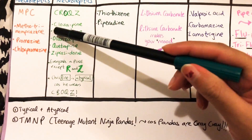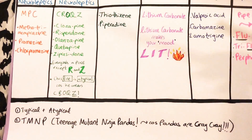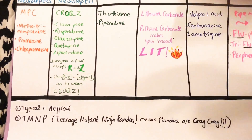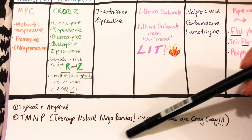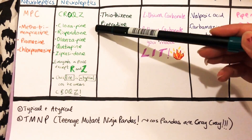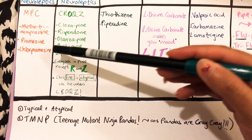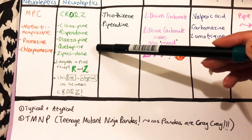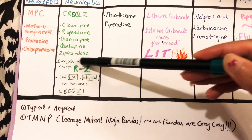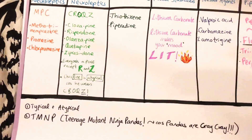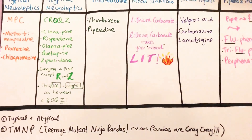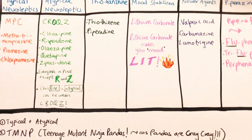The names are: clozapine — it's not pronounced 'pine,' it's pronounced 'peen,' but it helps you remember — risperidone, olanzapine, quetiapine, and ziprasidone. I'm probably pronouncing these completely wrong, but this is how I know them so far.